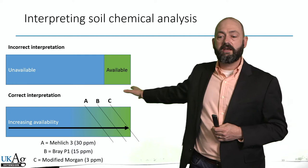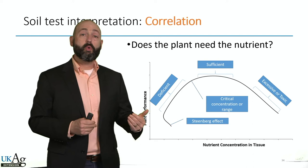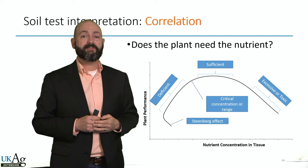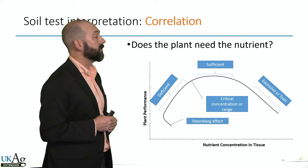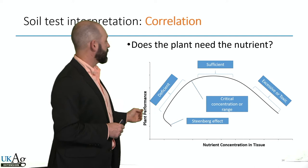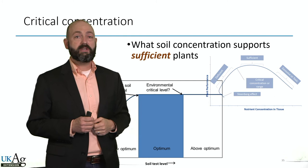We talked about that in the chemical analysis presentation. But what we want to know with correlation — the question we're asking — is: does the plant need added nutrients? Does it need fertilizer? Or is the soil going to supply enough to get maximum yield? We want that plant to be sufficient in whatever nutrient we're soil testing for.